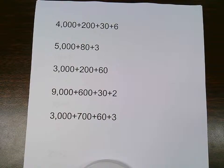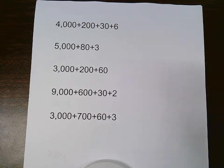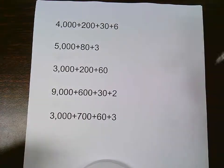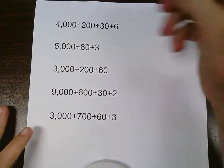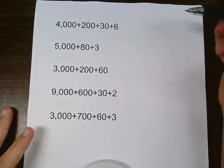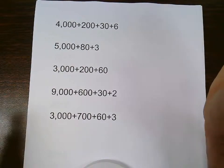We are going to work on changing expanded form numbers into standard form numbers. This first one I have up here is 4,000 plus 200 plus 30 plus 6. I will need to make sure that I add all of those up and make sure the place values are lined up.